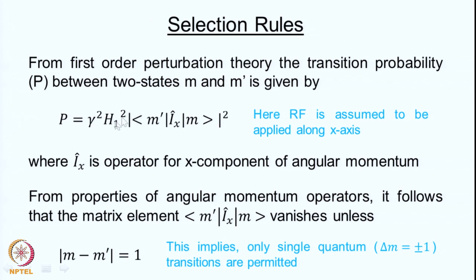We will not go into the details of this calculation. We will simply take the formula: P is equal to gamma squared H1 squared times the modulus squared of a matrix element between two states M dash and M, between which we are considering the transition of the spin system. Here Ix is the x-component of the angular momentum operator, applied along the x axis. If applied along the y axis, Iy would come in, but the conclusions regarding P remain the same.